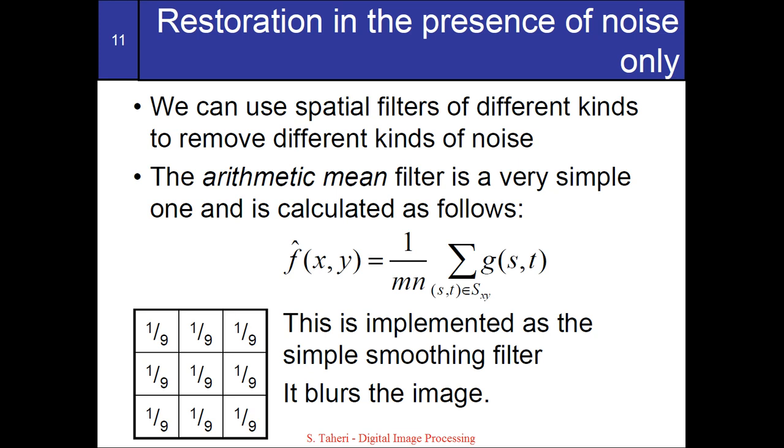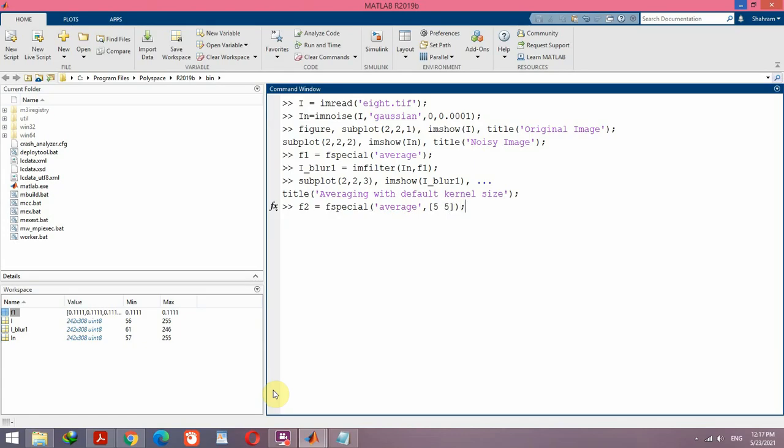In the previous one I used a 3 by 3 mask. Let's now apply a 5 by 5. So again by using fspecial function I create an average mask, but this time the size is 5 by 5.